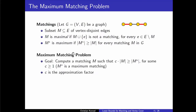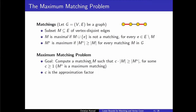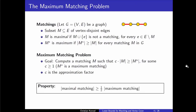More formally, the goal is to approximate the maximum matching problem — we want to output a matching such that C times the size of this matching is at least as large as a maximum matching, where C is the approximation factor greater than one. An important property: every maximal matching is at least of size one-half times the size of a maximum matching.